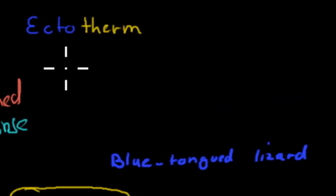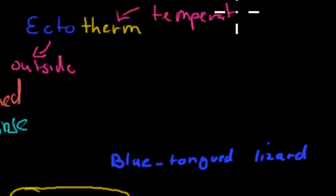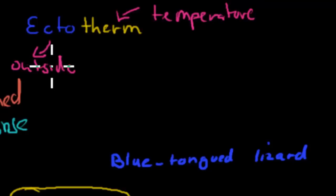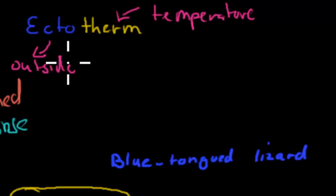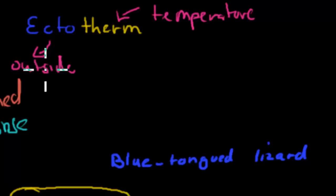On the other side we have ectotherms. Ecto means outside, and therm means temperature. These are organisms which can't maintain their own body temperature with the help of their body — they have whatever the outside temperature is as their inside temperature too. So if it's 0 degrees outside and you have an ectotherm, their internal temperature will also be 0°C. They can't maintain it at a fine level like endotherms can.